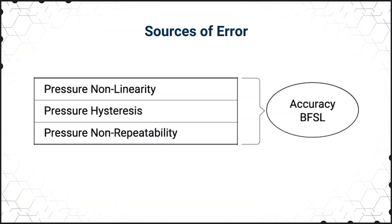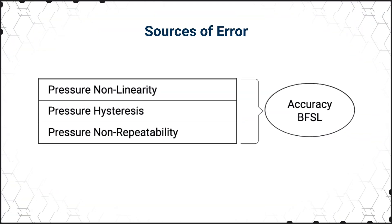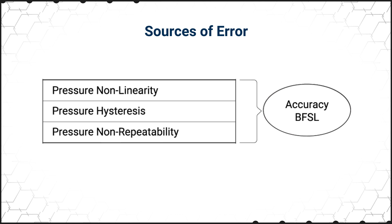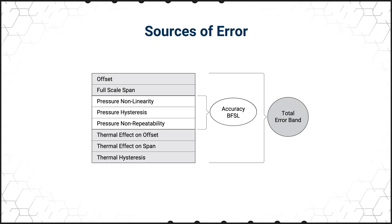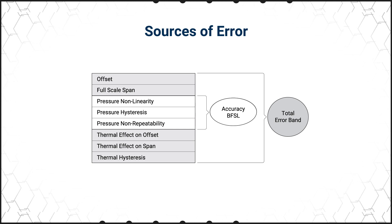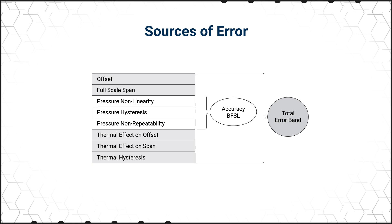Accuracy includes the effects of non-linearity, hysteresis, and non-repeatability and is a commonly used specification included for comparison with competing sensors. Accuracy is a component of TEB, which includes additional error sources that make it the most comprehensive measurement of a sensor's true accuracy and represents the worst error the sensor could experience, giving designers a true representation of the sensor's performance.